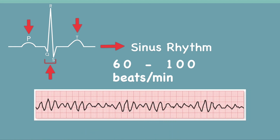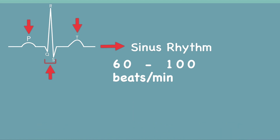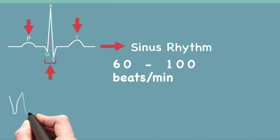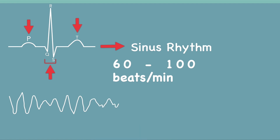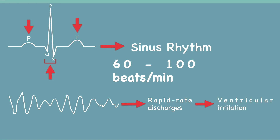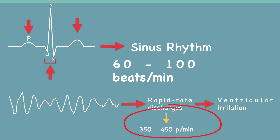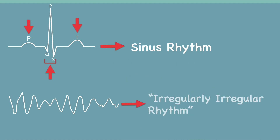The EKG in this question shows disordered electrical activity with no identifiable waves and irregular rhythm. This pattern is consistent with ventricular fibrillation, or V-fib. This rhythm is often associated with a heart attack in which the heart muscle doesn't get enough blood supply, becomes irritated, and causes secondary irritation of the electrical system. The ventricles suddenly attempt to contract at rates of up to 500 beats per minute. This rhythm may be referred to as an irregularly irregular rhythm.